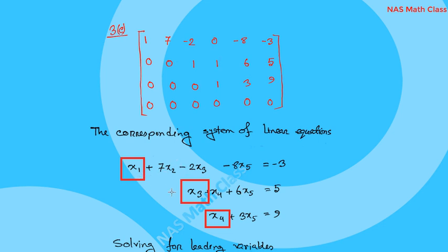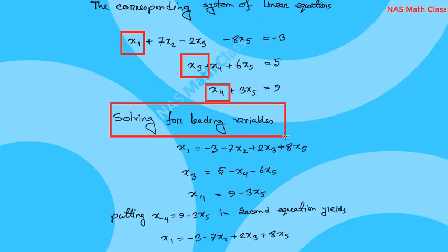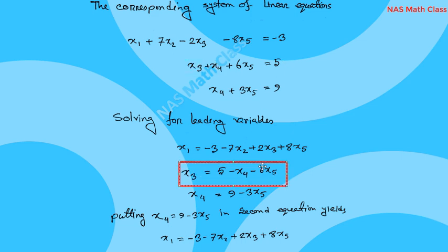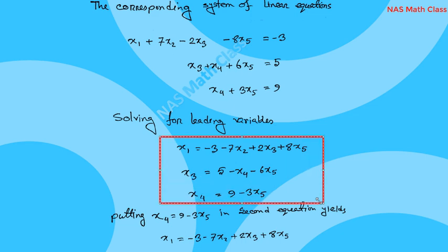Around x1, we also have x2 and x5. These are free variables — x2 and x5 are the free variables, given as parameters. The leading variables are expressed in terms of the free variables. From the equations, x1, x3, and x4 are solved as the leading variables, while x2 and x5 remain free.